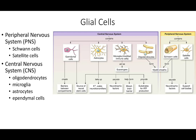We have accessory cells that support neurons, classified by where they're found. In the peripheral nervous system, we have Schwann cells — which form our myelin — and satellite cells, which are support cells that provide structure for the neuron and their cell bodies. Inside the central nervous system, the cells that form myelin are called oligodendrocytes.